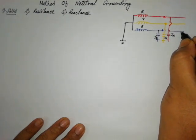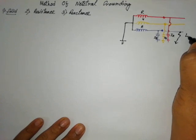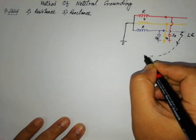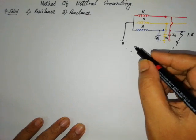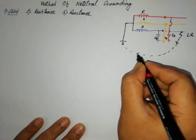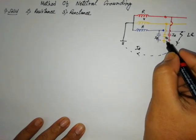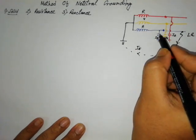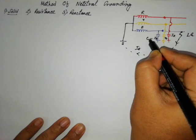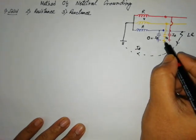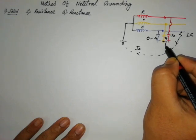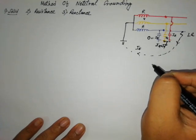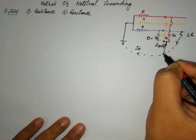What is the benefit? Whenever B phase comes in connection with the ground — an LG fault, which is very common — this fault will get a path through the ground. This is the fault current. During the fault, as B phase is in connection with the ground, IB will become zero. So the summation of charging current is IR plus IY — the charging current for the healthy phases only.